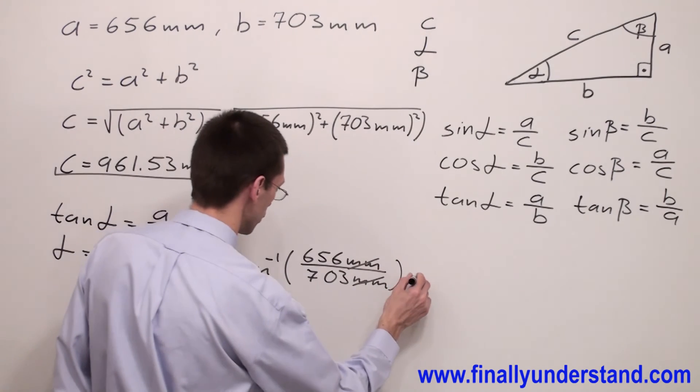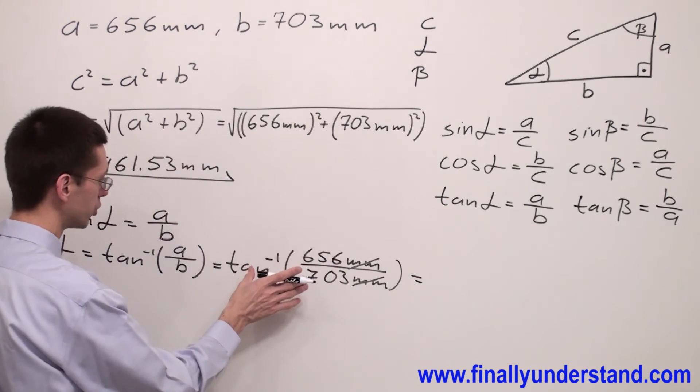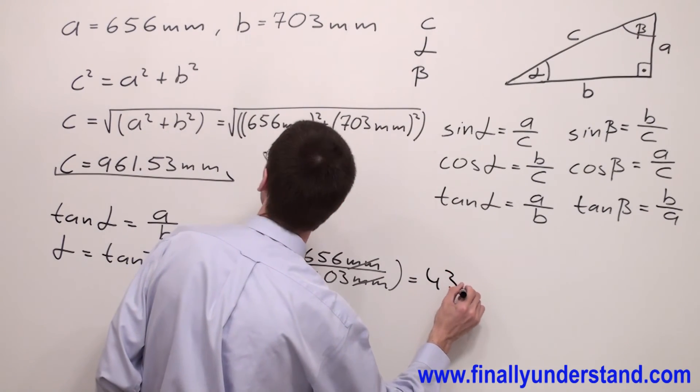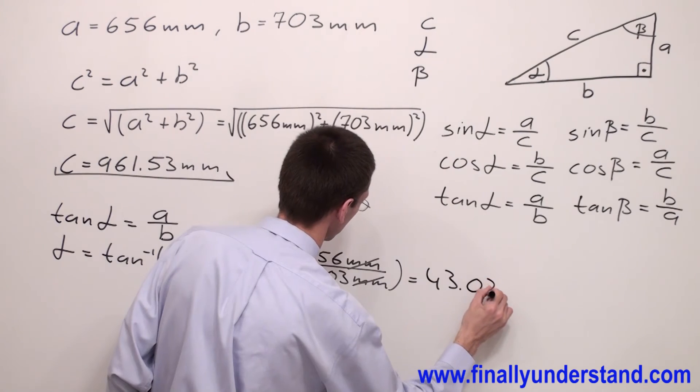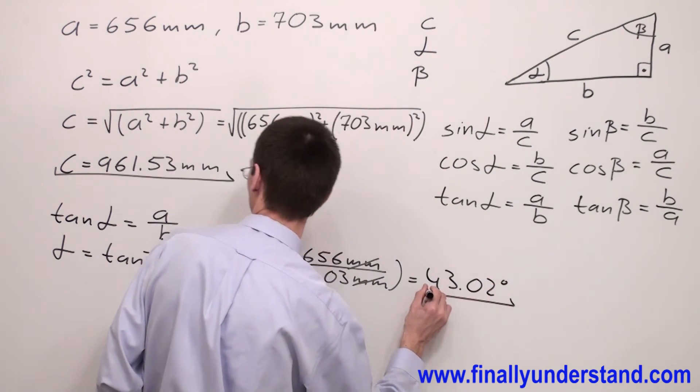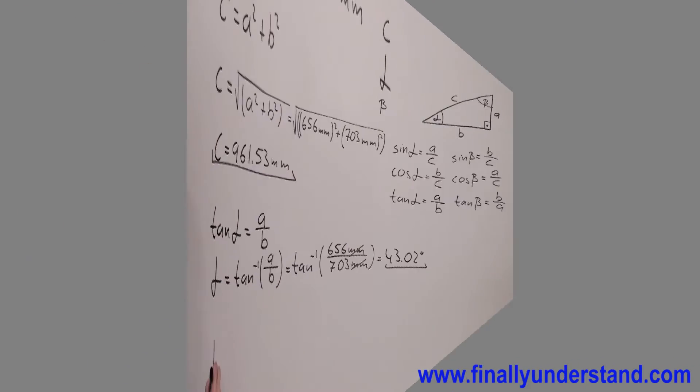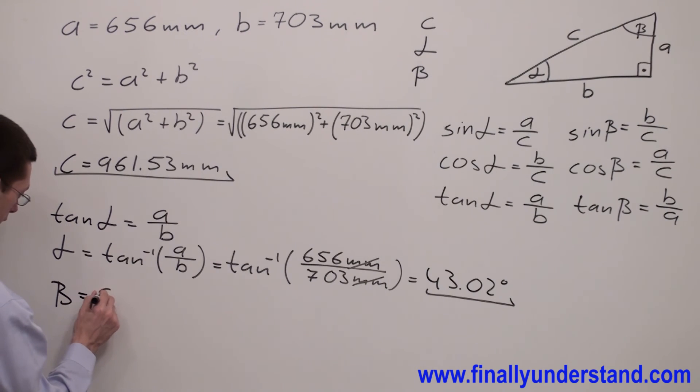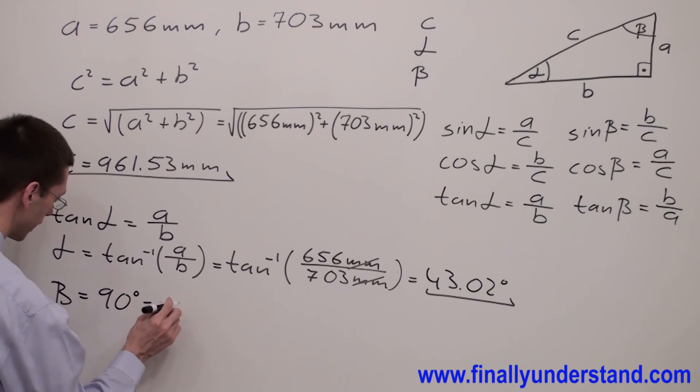If you're going to plug in this expression into the calculator, you'll get 43.02 degrees, and this is my angle alpha. Angle beta is equal to 90 degrees minus angle alpha, which is equal...